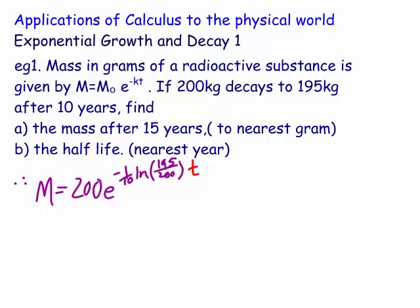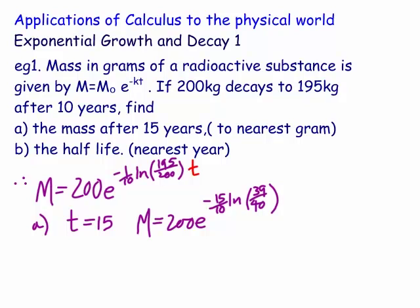Now what are we after? If you look at part a, you can see we're after, that in fact part a is that t equals 15. So we need to put 15 in for the time t. So M is now equal to 200 e to the minus, I'll write that as minus 15 over 10 or minus 3 over 2, ln of 195, let's just rewrite that now, it's 39 over 40, just to make it a little bit easier. And you can see I could have written 15 over 10 as minus 3 over 2. Now all I need to do is put this into the calculator and try and work out what my M is. If you just put that into the calculator, you end up getting roughly about 192.547 kilograms.